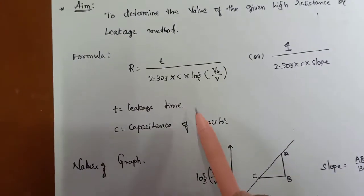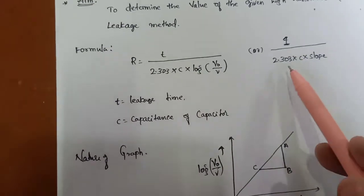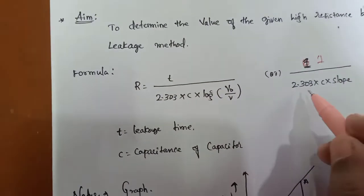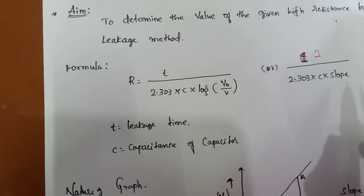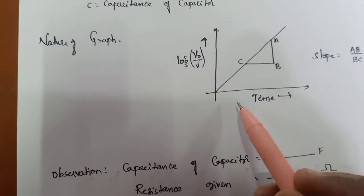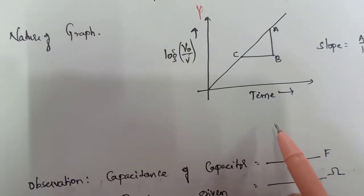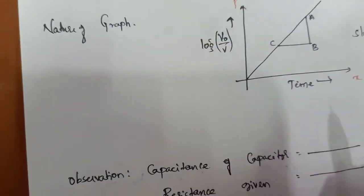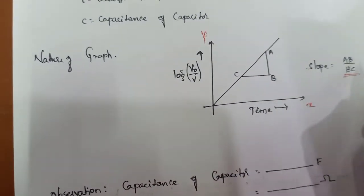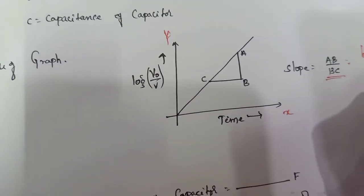The formula is R = t / (2.303 × C × log(V0/V)), or equivalently R = 1 / (2.303 × C × slope). The slope is calculated using a graph where along the Y-axis we take log(V0/V) and along the X-axis we take time t. The slope AB/BC gives: AB = log(V0/V) and BC = time t.